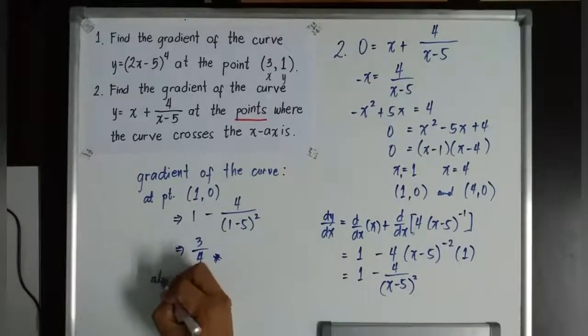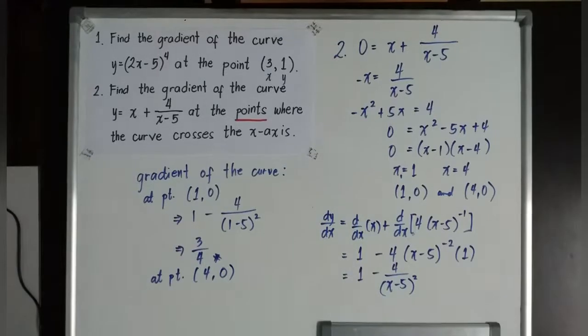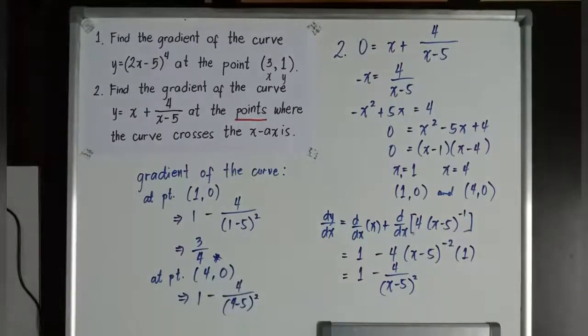How about if it is at point 4, 0? If it is at point 4, 0, it will become 1 minus 4 over 4 minus 5 to the power of 2. What is 4 minus 5? It is negative 1. Negative 1 to the power of 2 is equivalent to 1. 4 divided by 1 is 4. 1 minus 4 is equal to negative 3. So another answer here is negative 3. So the final answers for number 2 are 3 over 4 and negative 3.